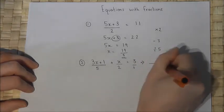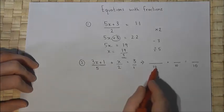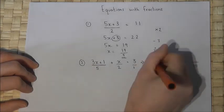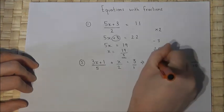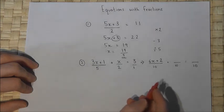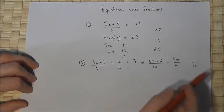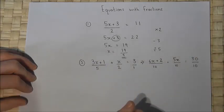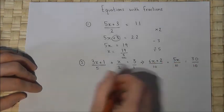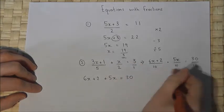Since 5, 2 and 1 all go into 10, I can write each of the fractions over 10. To get from 5 to 10 I multiply by 2, so I must multiply the top by 2 as well: 2 times 3x is 6x, 2 times 1 is 2. The denominator 2 has been multiplied by 5, so the top becomes 5x. The third fraction's denominator 1 is multiplied by 10, so 3 times 10 is 30. Now they're all over the same number, so I can cancel off all the tens.